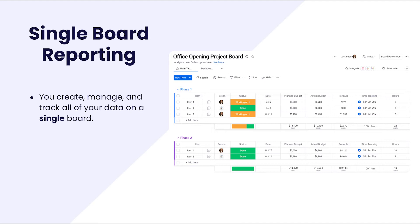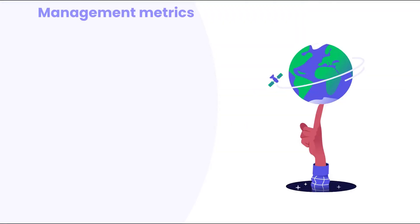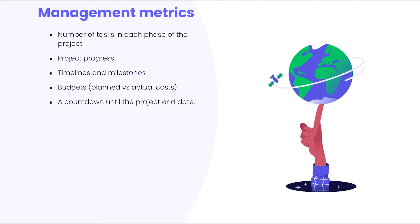There are many moving parts and it will be important that management stay on top of where we are in terms of different timelines, our progress, our budgets, and more. With regards to what they're specifically looking for, management would like to see the number of tasks in each phase of the project, the progress of the project, the different timelines and milestones, the different budgets, and a countdown until the project end date.